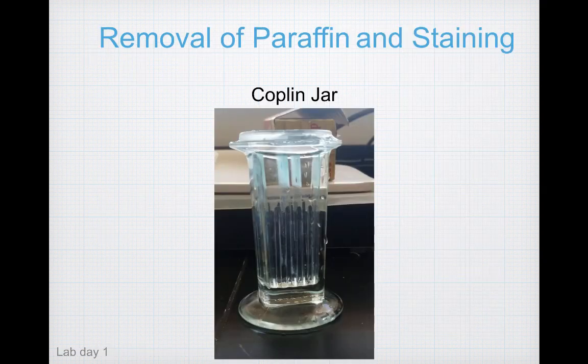Before talking about the next steps — removal of paraffin and staining — I want to introduce you to a Coplin jar. A Coplin jar has grooves in it so that microscope slides can stand on their end, allowing you to process many slides at one time. Each Coplin jar accommodates five slides and holds about 40 milliliters of liquid, so you'll need about three Coplin jars.